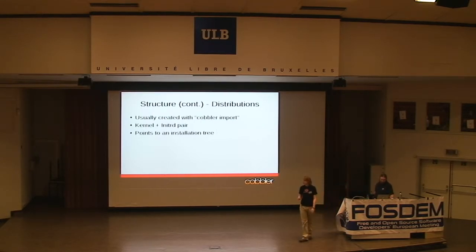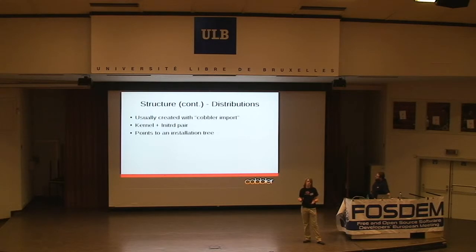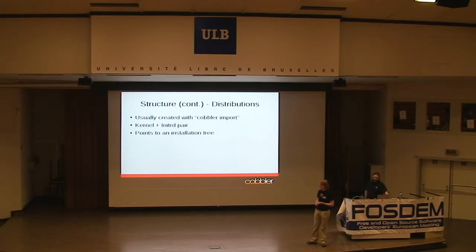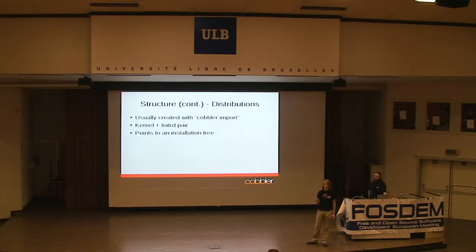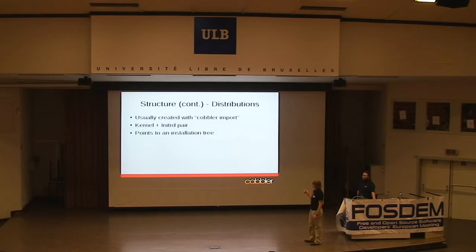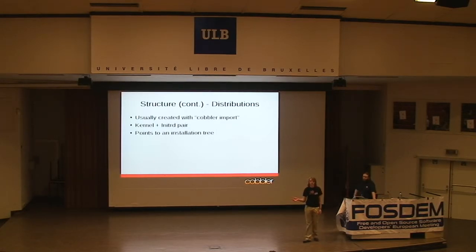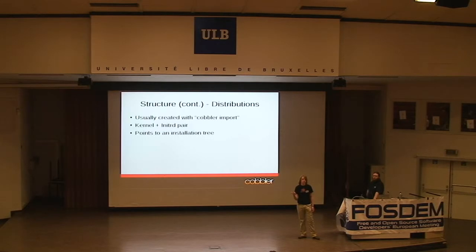What's a distribution in Cobbler? A distribution is nothing more than a kernel and an installer RAM disk. Most modern distributions have some kind of Netboot CD, and what's on that CD is just a kernel and an installer RAM disk - that installer RAM disk knows enough to start the installation. The distribution also has a URL to where the software repository is located. With Cobbler, we run 'cobbler import' and point it to our DVD medium or a remote FTP to download the entire distribution. Cobbler scans it for the installer kernel and RAM disk, and creates a new distribution from it.